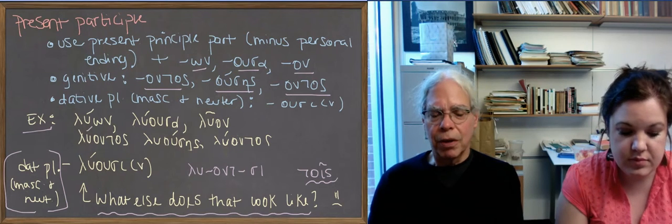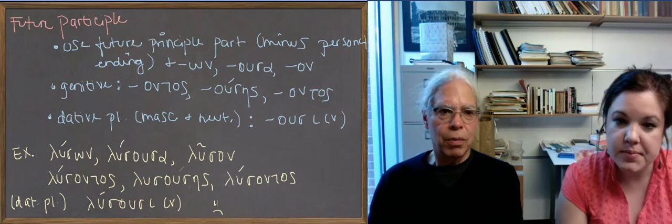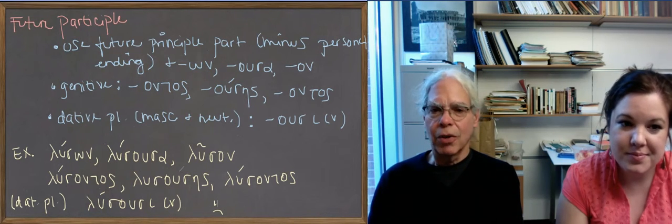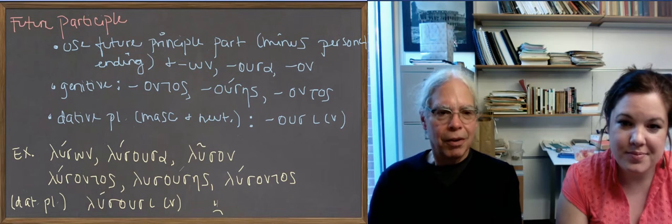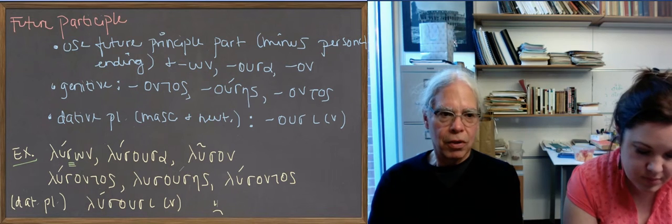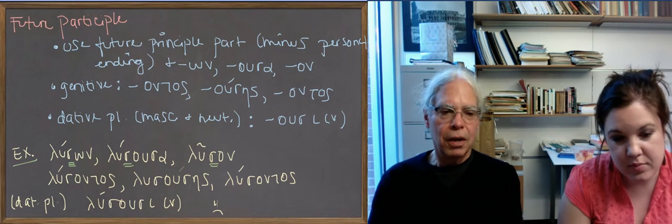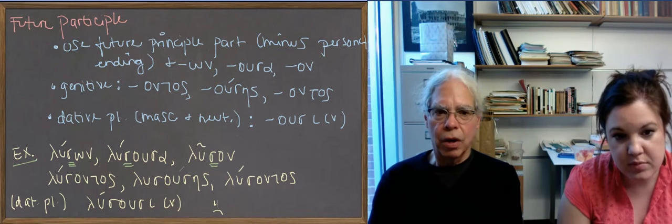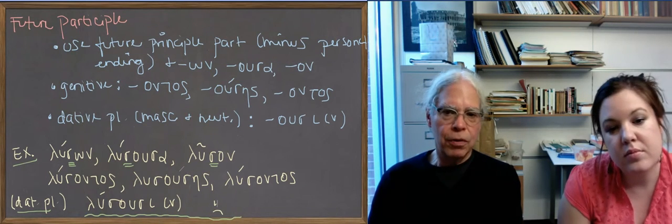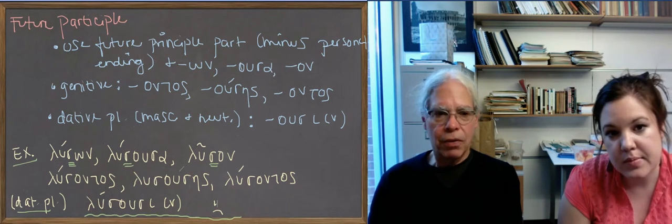All right, once we have the present participle, then remembering how you make futures, look at how you make a future participle. You start with the future principal part minus the personal ending. And to that you add on, ousa, on. And the genitive is ontos, ousēs, ontos. And the dative plural is ousi. So it's the same thing, but there's the s, that's the sign of the future for most Greek verbs. So that gives you not luōn, luousa, and luon, but lusōn, lusousa, luson. Lusontos, lusousēs, lusontos is the genitive, and the dative plural is lusousi. So really, the first form, the present participle, the future participle, are only different from each other in the sign of the future, the s.